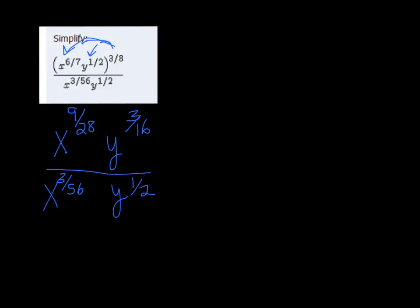Okay, so now we have an x in the top and an x in the bottom, so we can use the quotient rule to subtract those. So we get 9 divided by 28 minus 3 divided by 56. And change that to a fraction, we get x to the 15 over 56.